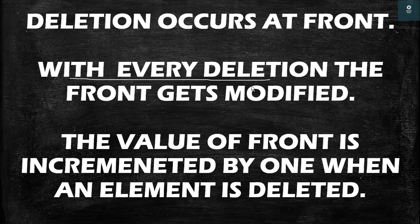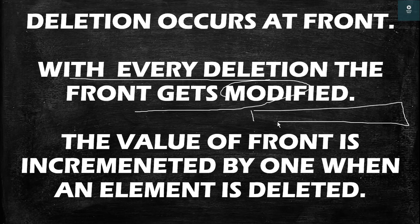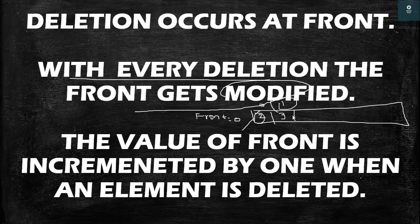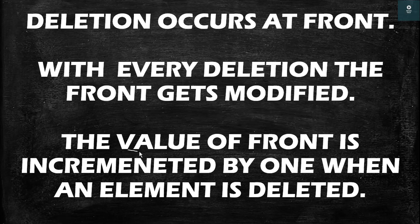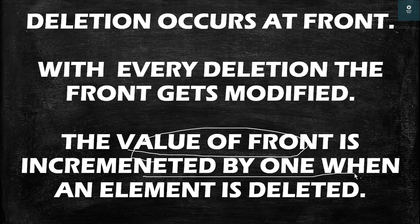With every deletion the front gets modified. So we have this as the queue — suppose this is 0th index, this is 1st index, and suppose we have 2 here and 3 here. Initially we have front as 0, because the first element is at 0th index. After deleting the first element, that is after deleting the 2, we have front equal to 1. Why? Because now the first element of the queue is 3 and the index of 3 is 1. So the value of front is incremented by 1 when an element is deleted.